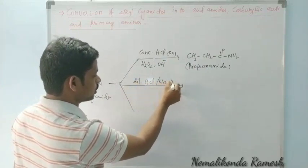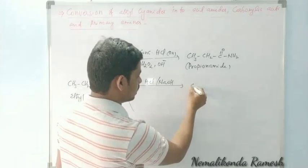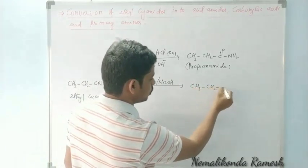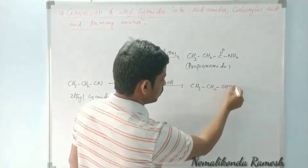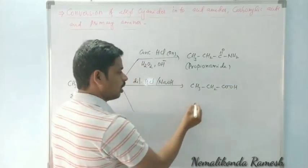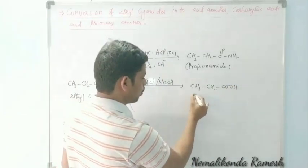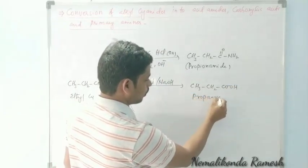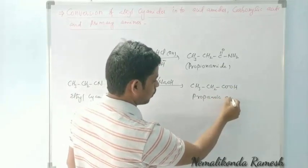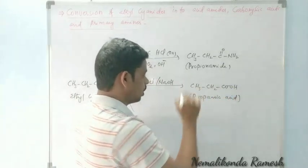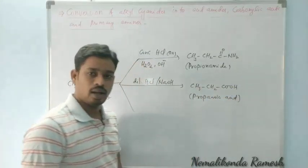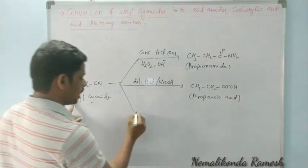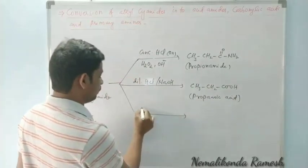When the same ethyl cyanide is treated with dilute HCl or sodium hydroxide, we get the carboxylic acid CH₃CH₂COOH. The name of this compound is propanoic acid. This represents complete hydrolysis of the cyanide.